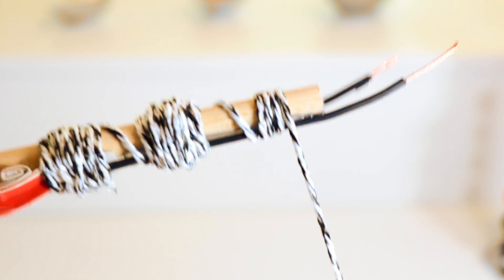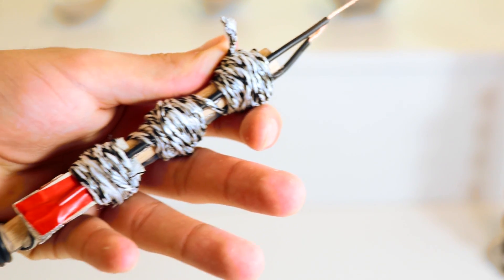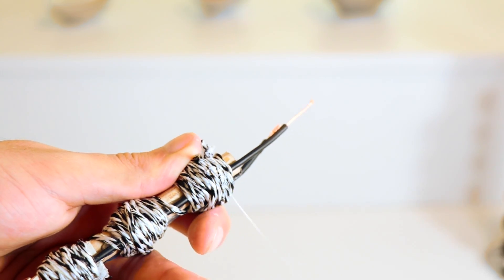Like this you can create a decorative wand grip. Once you're at the end you can secure the string with another drop of hot glue.